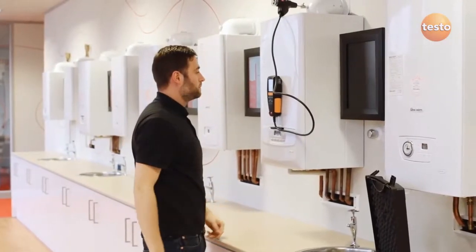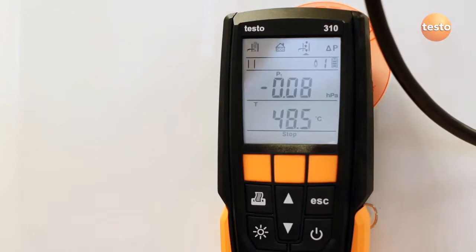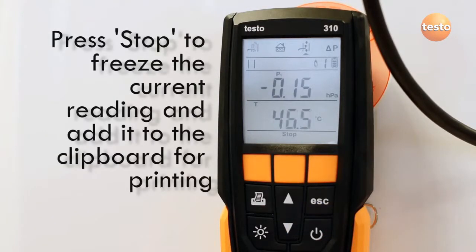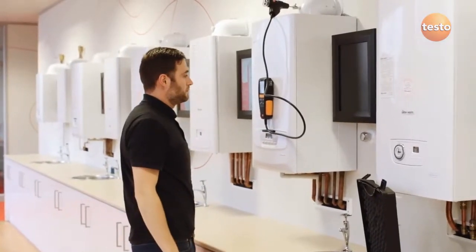The 310 immediately displays the small pressure caused by the flue draft. When the reading is stable, press stop, which freezes the current measurement and puts it in the clipboard for printing later.